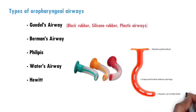Berman's airway is a recently popular type of airway. Its shape looks similar to Gudel's airway, but in addition it has a dual channel design which opens on the sides to allow for unobstructed passage of air and easy access to a suction catheter.